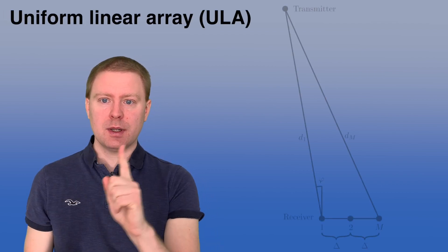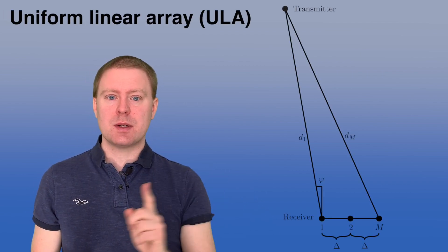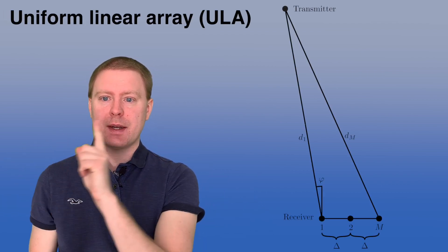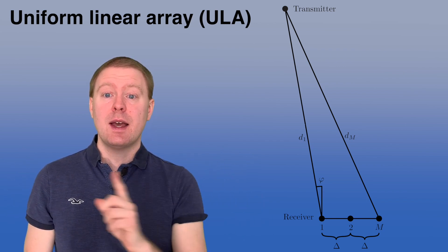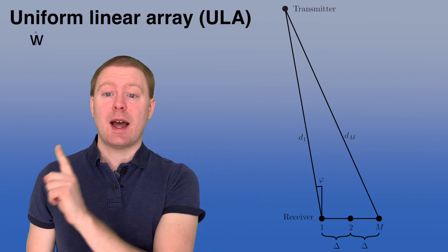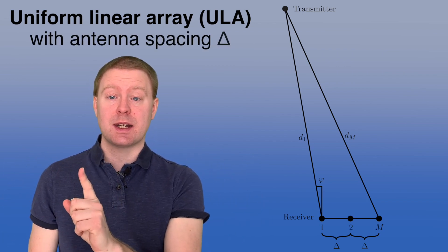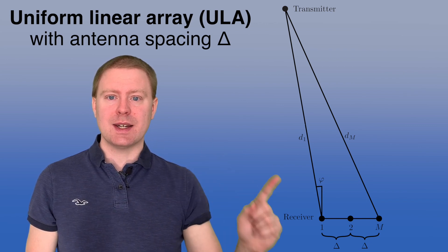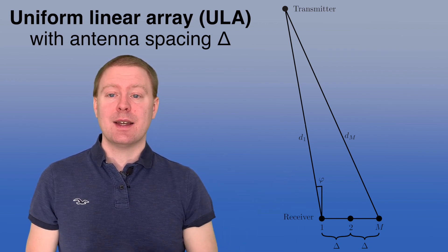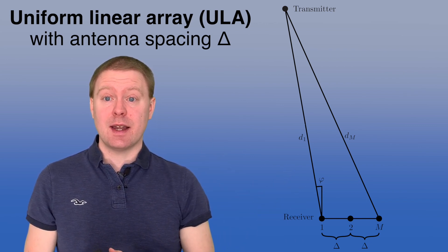Let's start with the SIMO channel case when we have a uniform linear array, which means that you have M antennas placed next to each other on a line, with an antenna spacing that we call delta between each of the adjacent antennas.